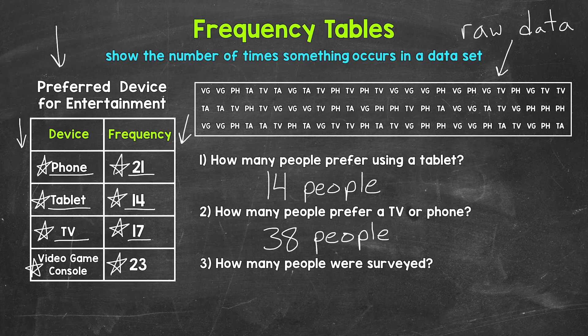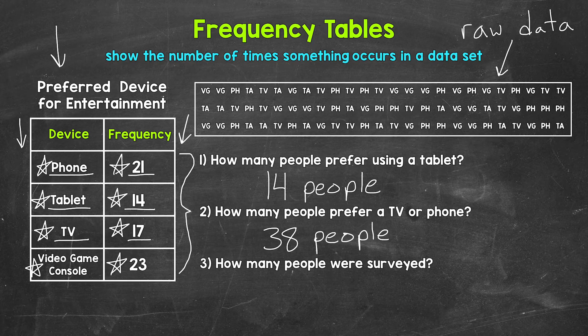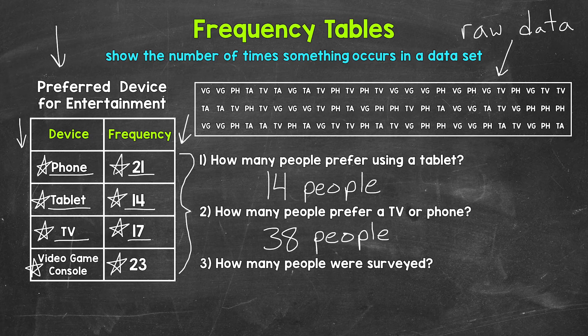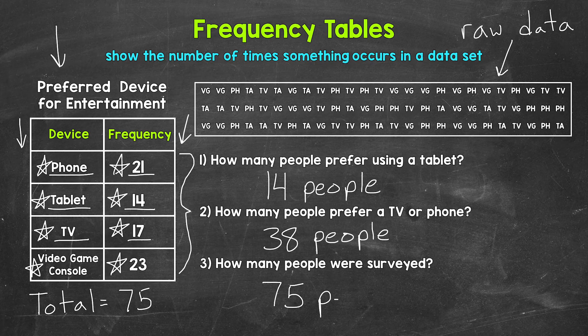And then lastly, for number three, we have, how many people were surveyed? So for this one, what we need to do, we need to add all of the numbers in the frequency column. So 21 people plus 14 people plus 17 people plus 23 people. 21 plus 14 is 35. 35 plus 17 is 52. And then 52 plus 23 gives us a total of 75. So how many people were surveyed? 75 people.